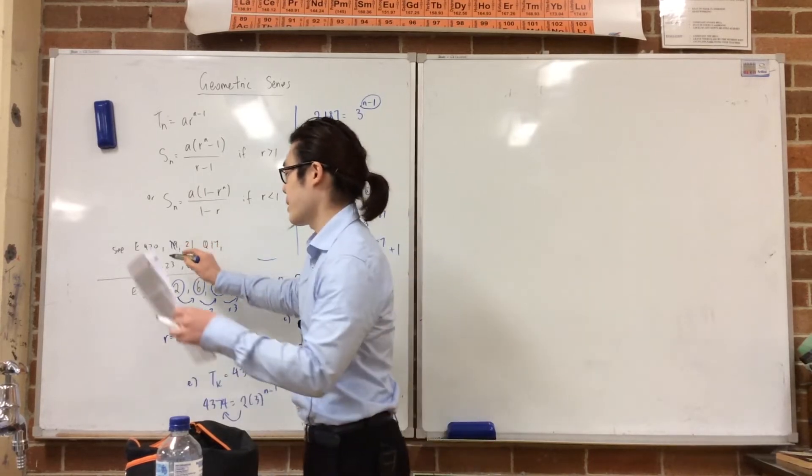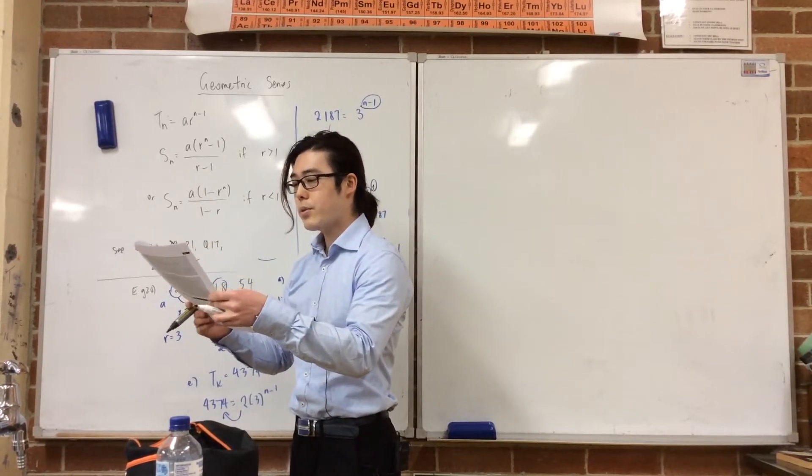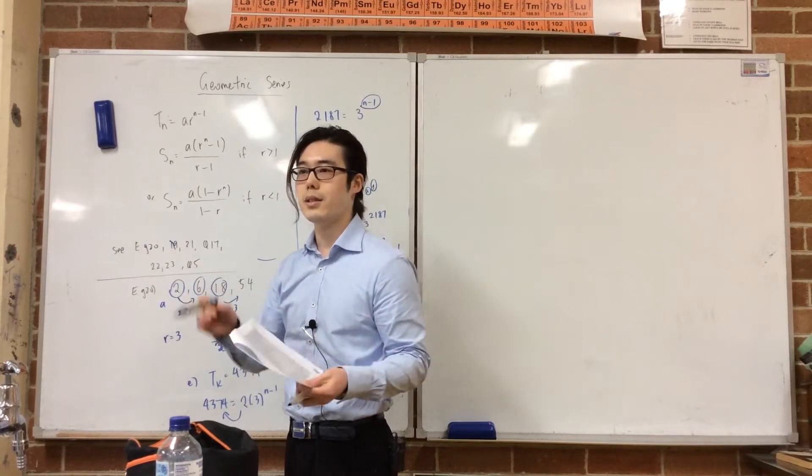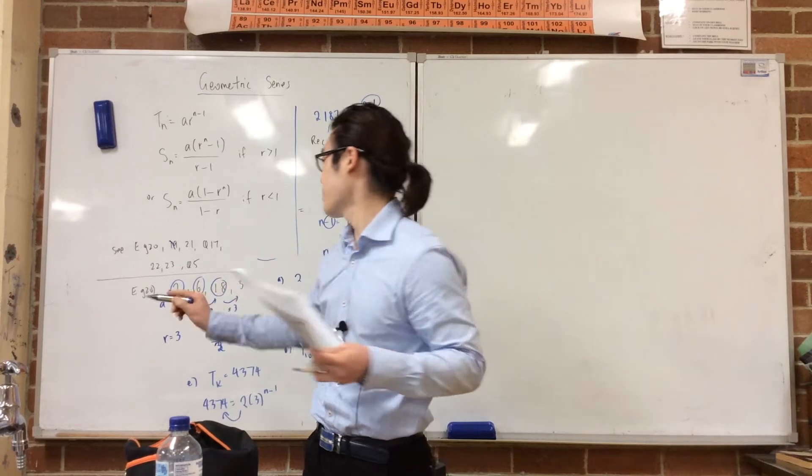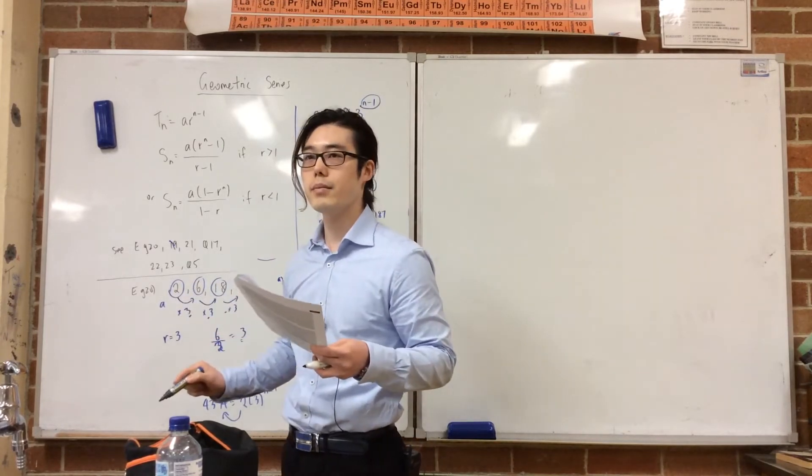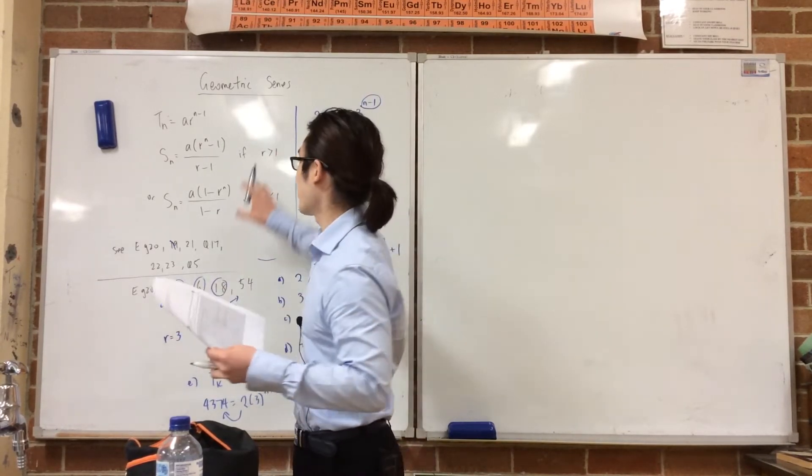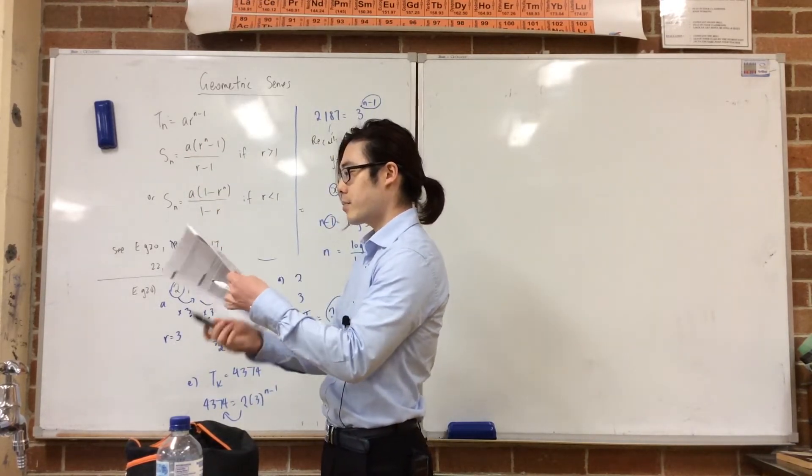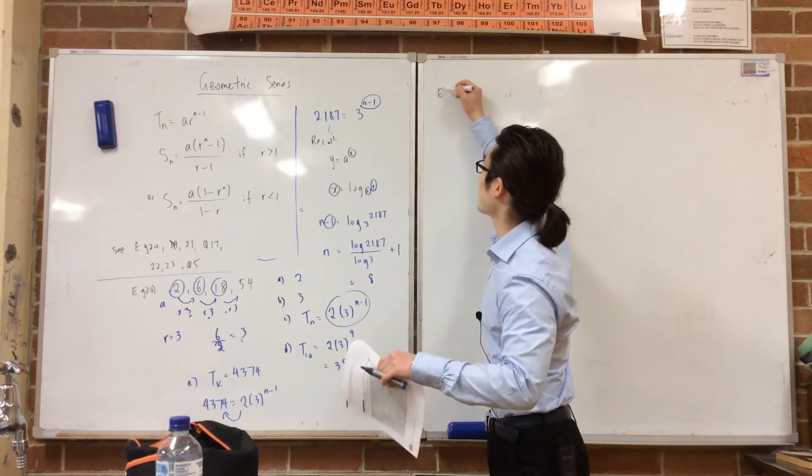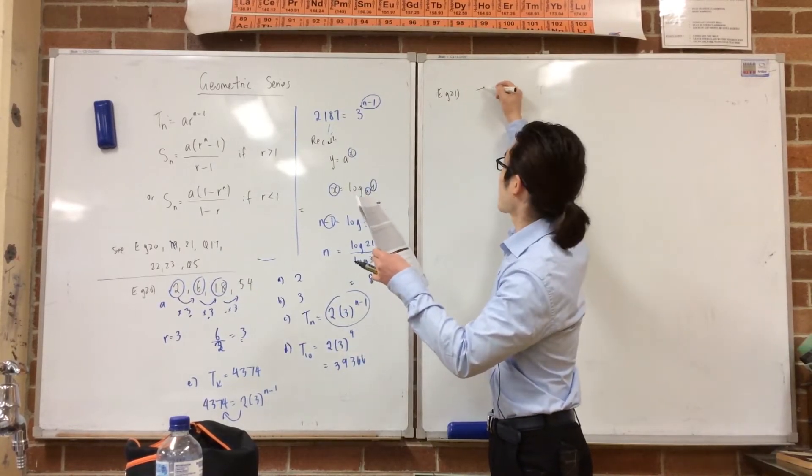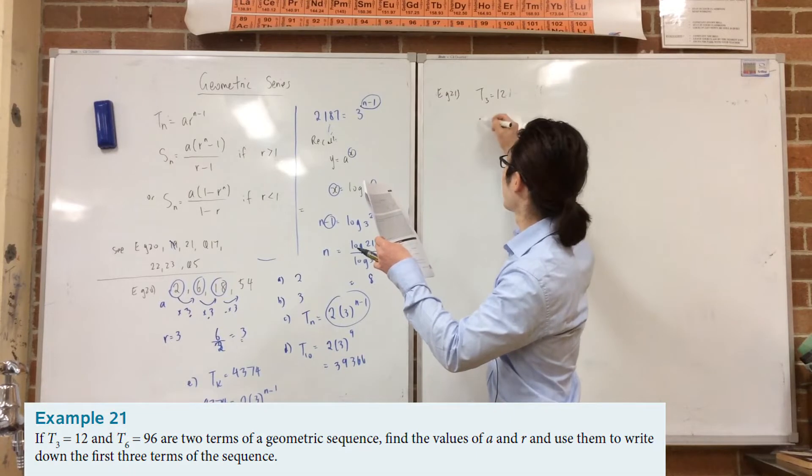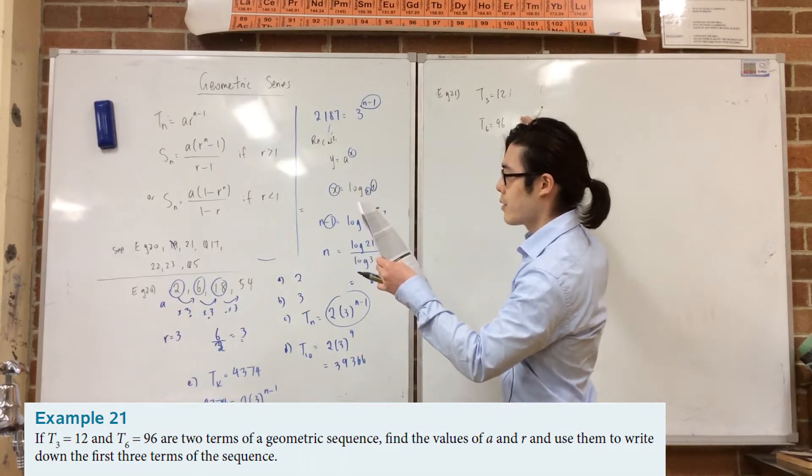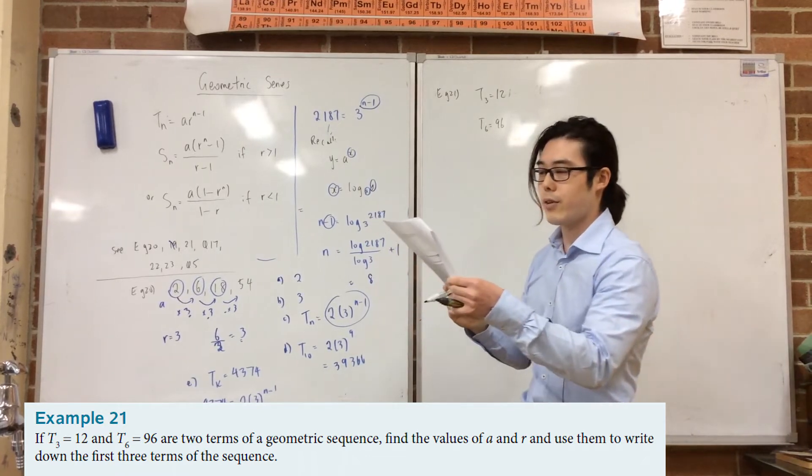Alright, so that's the example. Actually, I could skip example 19. It's just some, example 19, there are some obviously where it's not a geometric series if it doesn't go up by a certain multiplier. It's always got to be the same number. You can also divide by a certain number. So we'll get to that one later. Let's have a look at example 21.